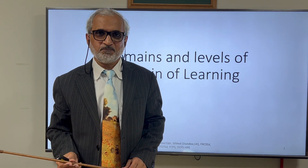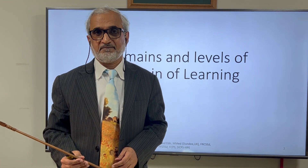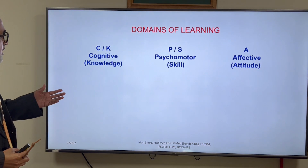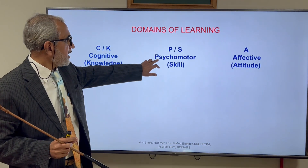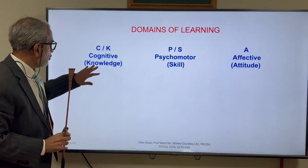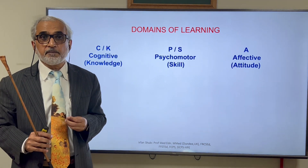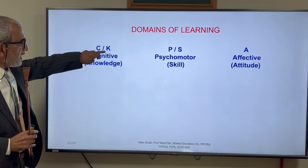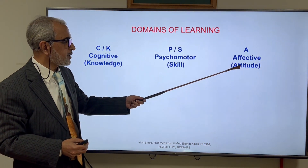Good morning, peace be upon you. This audio lesson is about learning and domains of learning. When we're talking about learning, we are talking about domains of learning. There are three domains: cognitive (brain), psychomotor (doing something), and affective. The other names for these are knowledge, skill, and attitude. The symbols are: C for cognitive, K for knowledge, P for psychomotor, S for skill, A for affective, and also A for attitude.